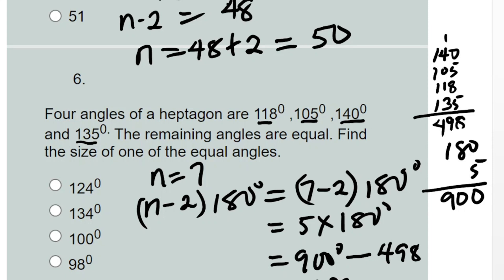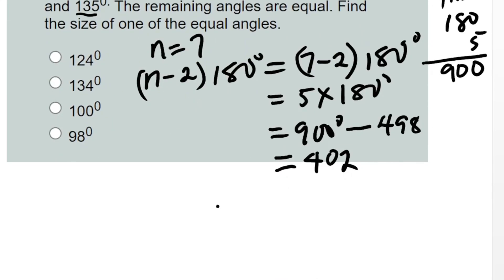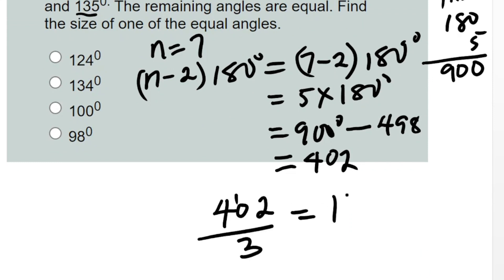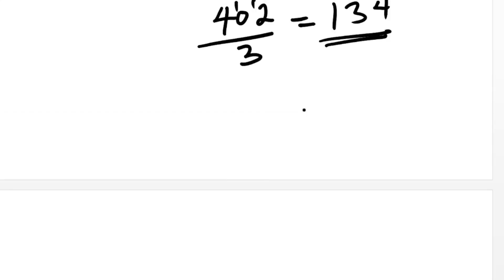The remaining three equal angles sum to 402 degrees. Dividing 402 by 3 gives us 134 degrees. Since the question asks for the size of one of the equal angles, the answer is 134 degrees.